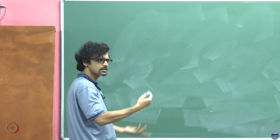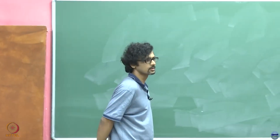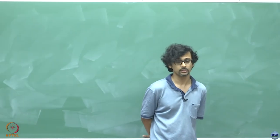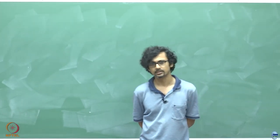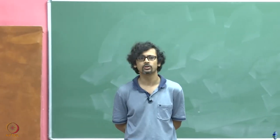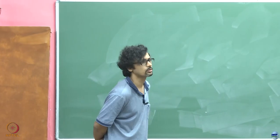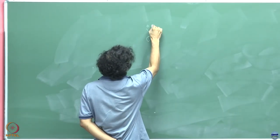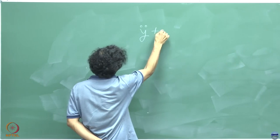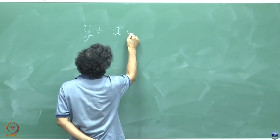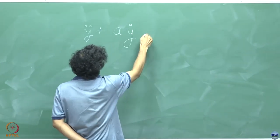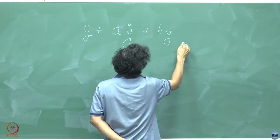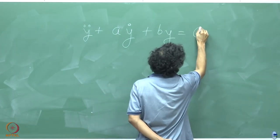Let us consider a very special case: a linear constant coefficient second order differential equation. Let us say it is y double dot plus a y dot plus b y is equal to 0.